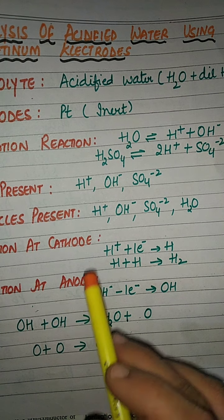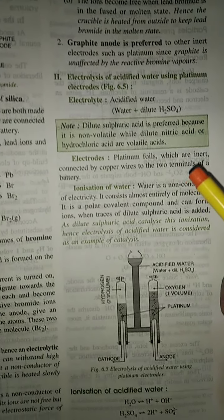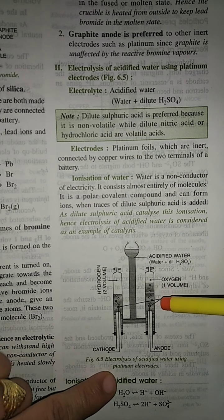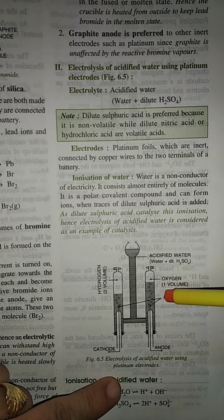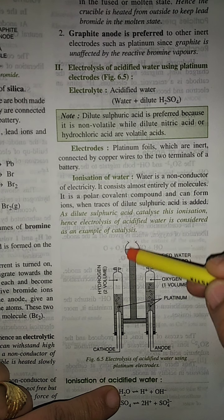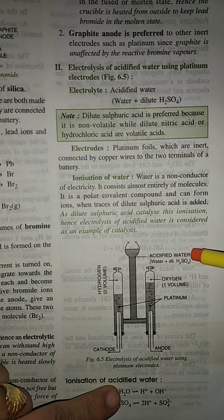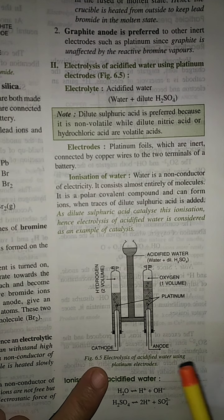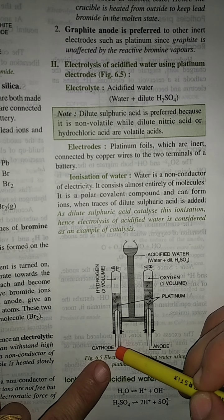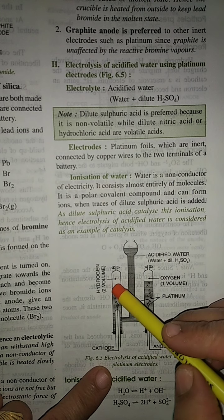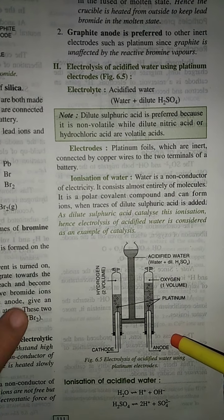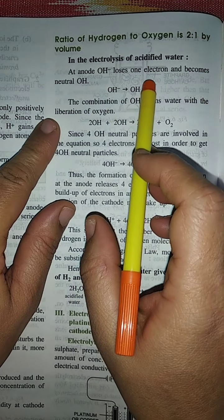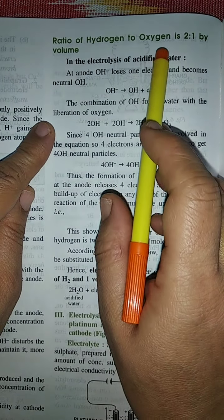O₂ gas is released at the anode and hydrogen gas at the cathode. The diagram shows the apparatus for electrolysis of acidified water — there are two limbs, one for collection of hydrogen and the other for collection of oxygen gas. In between, there is a bulb through which acidified water (water plus dilute sulfuric acid) is poured. Cathode is connected to the negative terminal and anode to the positive terminal. H⁺ moves towards cathode, OH⁻ towards anode. In the electrolysis of acidified water, the ratio of hydrogen to oxygen is 2:1.